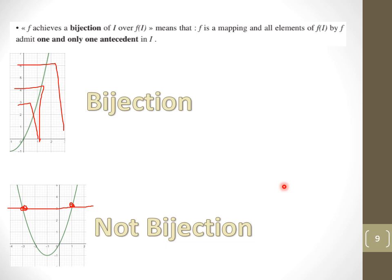What is the meaning of bijection? Bijection means f is a mapping where all elements of f of i admit one and only one antecedent. In the first figure, the function is increasing and it is a bijection because every x has its own unique y. In the second figure, it is not a bijection because for a value like y equals 3, you can find two different x values — two antecedents. So for a bijection, every x must admit only one y.